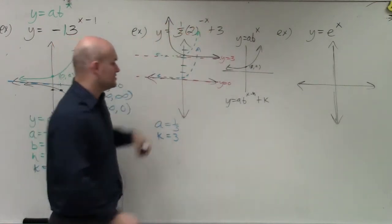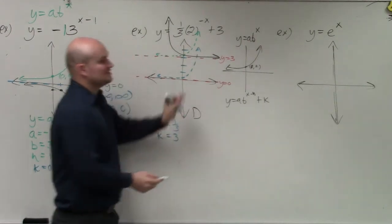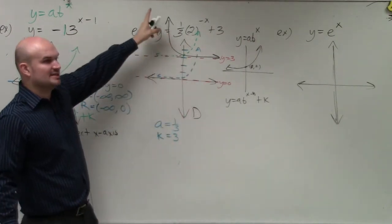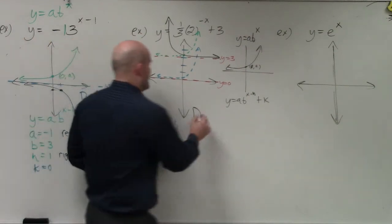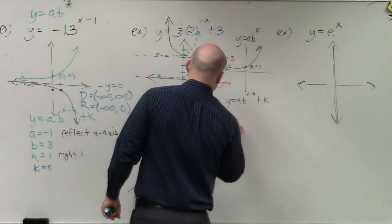Now, let's look at the domain and range. The domain, how far does this graph go to the left? As it goes up, it's going to continue to go to the left. So the domain is going to be from negative infinity to infinity.